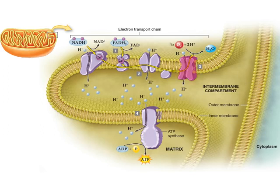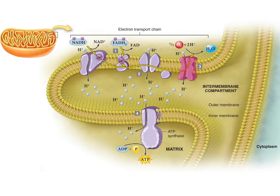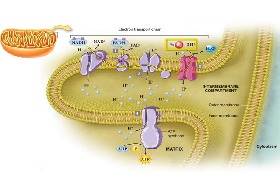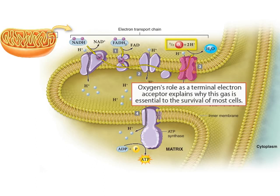Now look at the fourth enzyme of the transport chain. Since this enzyme is at the end of the transport chain, it has to get rid of the electrons that it has acquired from the third protein in the chain. Otherwise, the whole chain will stop working as the carrier proteins become clogged with electrons. At the fourth enzyme, the electrons are dumped onto an oxygen, which is called a terminal electron acceptor. The oxygen then immediately reacts with free hydrogens to form water, one of the end products of respiration. Oxygen's role as a terminal electron acceptor explains why this gas is essential to the survival of most cells.